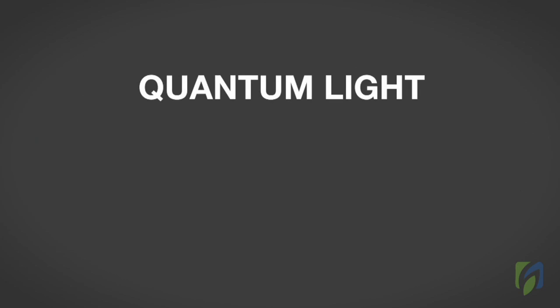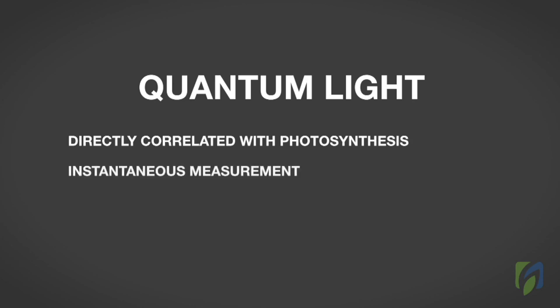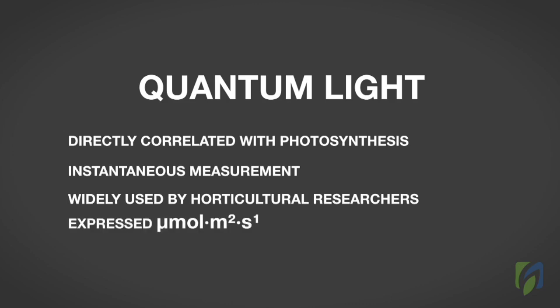Quantum light. Another measure of light, called quantum light, is directly correlated to photosynthesis. Quantum light is also an instantaneous measurement. Quantum light is widely used by horticultural researchers and is expressed in micromoles per square meter per second. This type of light quantifies the number of photons that are used for photosynthesis falling in a square meter per second.